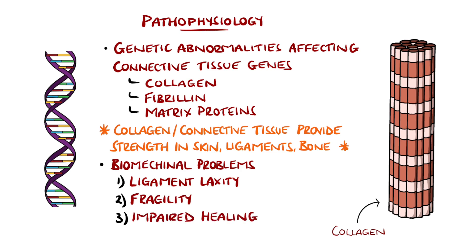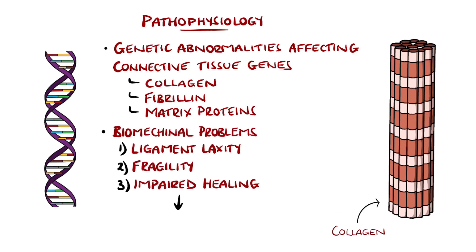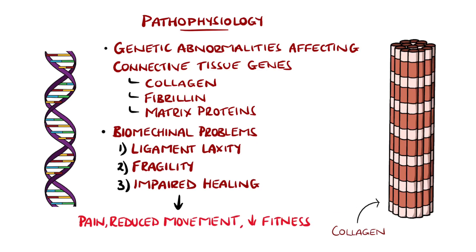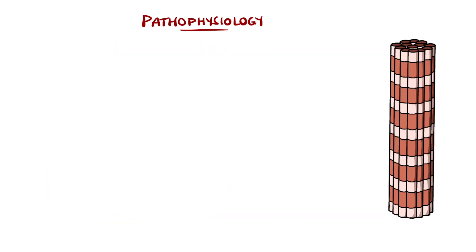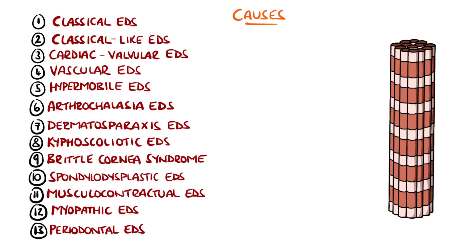A combination of these three can then lead to pain, reduced movement, and a reduction in cardiovascular fitness. There are 13 subtypes, with hypermobile being the most common, followed by classical EDS and vascular EDS.